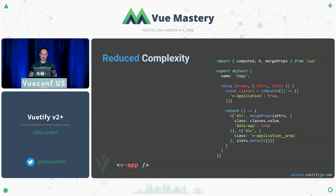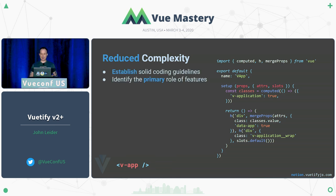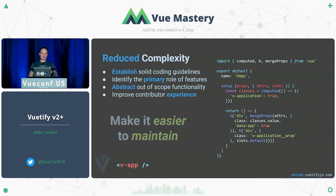Reducing complexity: in version 3, this is an example of what our vApp component would look like. Same as Evan's talk — we're importing what we use. Instead of a computed property for classes on the Vue object, we just use the new computed import. When we establish solid coding guidelines, we identify the primary role of what a component or feature should do, take out all out-of-scope functionality and abstract it into something shared, which improves the contributor experience and makes it easier to maintain.